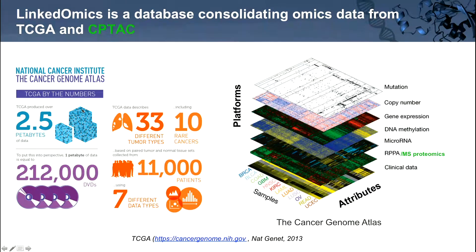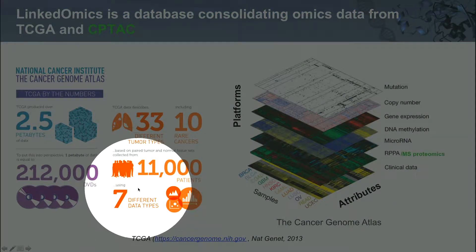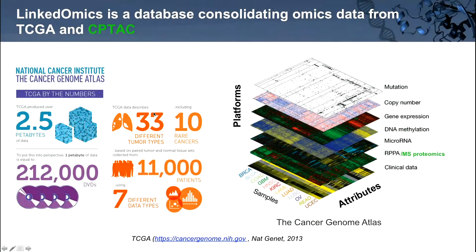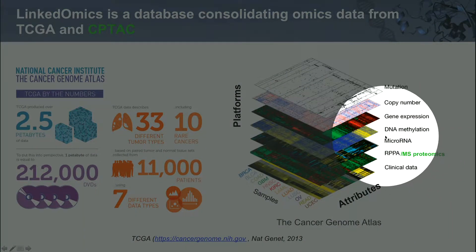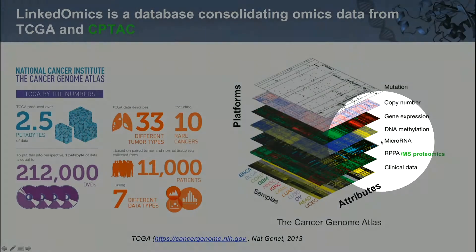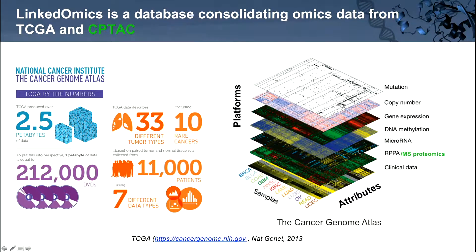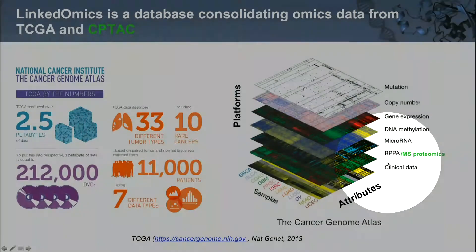TCGA is a large project spearheaded by the NIH between 2006 and 2017, in which they collected omics data and other types of data — seven different data types from 33 different types of cancer in large clinical studies involving approximately 11,000 patients. Thirty-two of those cancer types are represented in LinkedOmics. The data types include genomics data such as mutation and copy number data, DNA methylation data, transcriptomics data such as gene expression and microRNA expression, proteomics data from RPPA or protein microarrays, and associated clinical data.